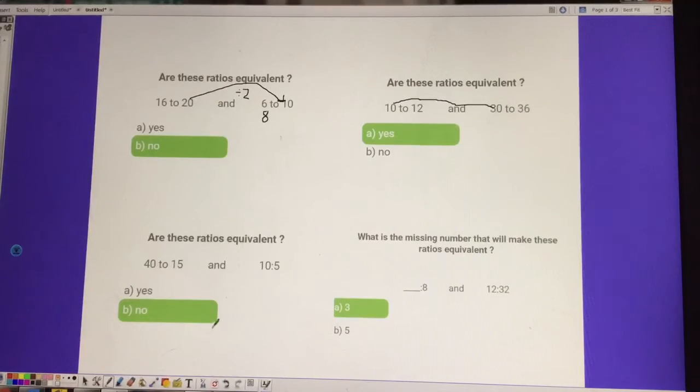To get from 10 to 30, you multiply by 3, right? To get from 12 to 36, you multiply by 3. They are indeed equivalent. So, if you count by 10s and count by 12s, those would line up in the same rows.